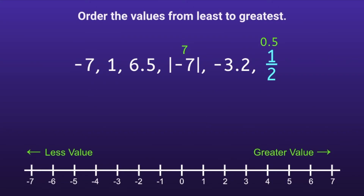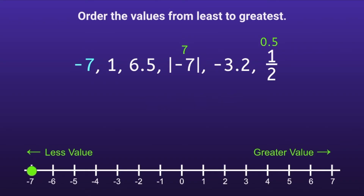Now, since all of our numbers are whole numbers or decimals, we can graph the numbers. We'll start with negative 7, then we have 1, 6.5 — which is halfway between positive 6 and positive 7 — the absolute value of negative 7 which is positive 7, negative 3.2, and finally 0.5, which is halfway between 0 and 1.